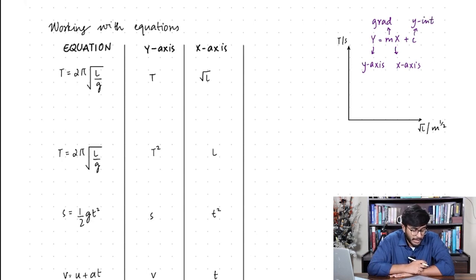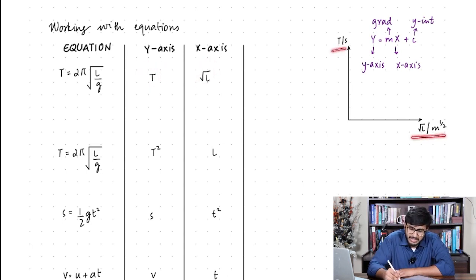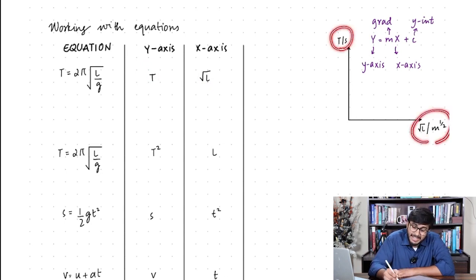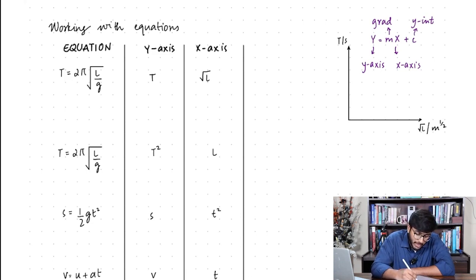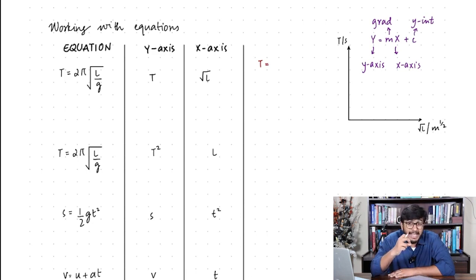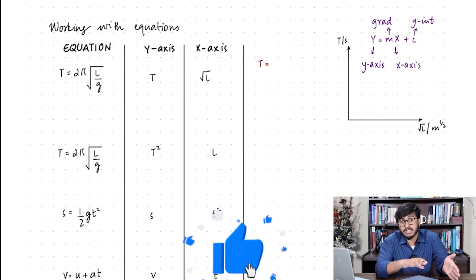Right now we have an equation that says t equals 2π times the square root of l over g. The question goes: if I'm plotting t on the y-axis against root l on the x-axis — I've drawn a graph with an example over here — what would the gradient and y-intercept tell me? So I'm going to rearrange the equation such that t and root l are isolated from all the other variables, with t on the left-hand side.